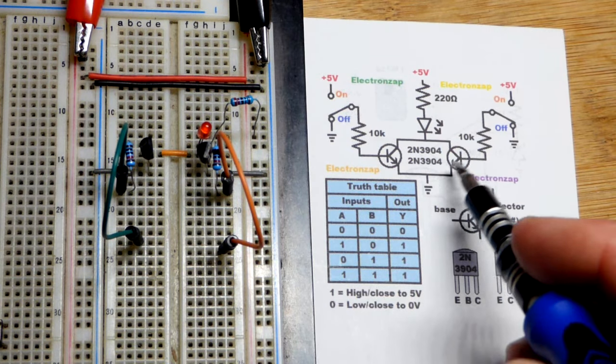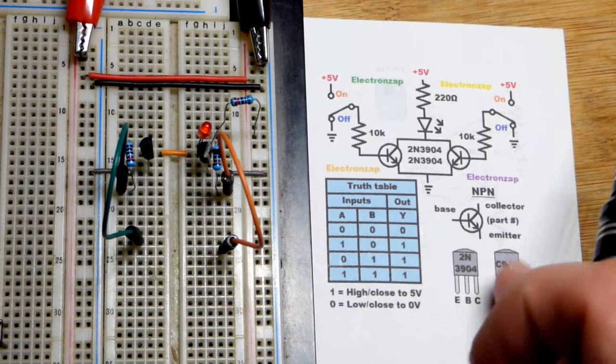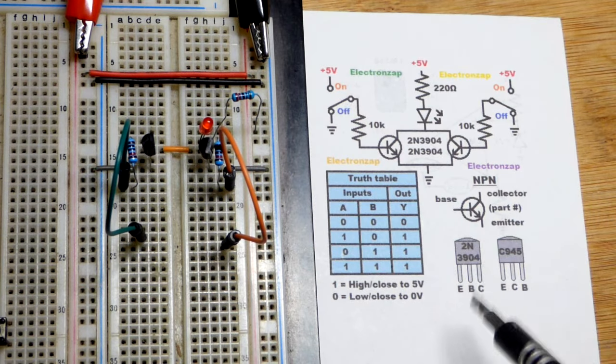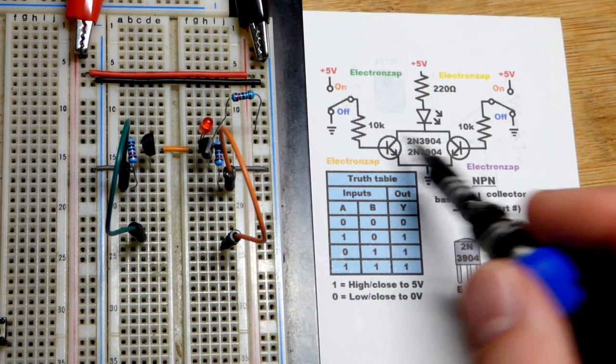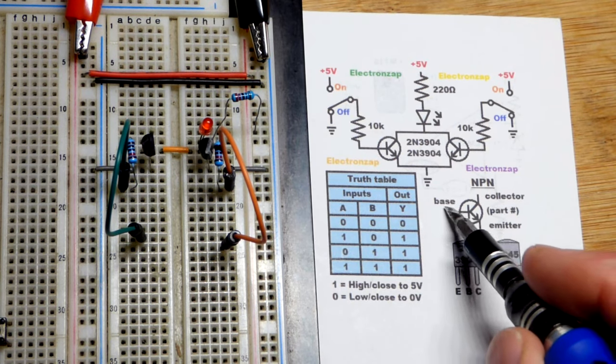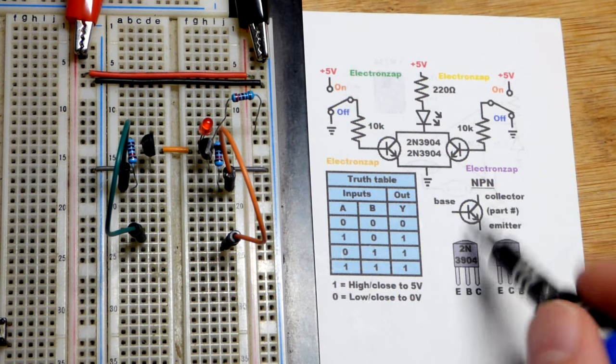So now in this video, we have a couple NPN bipolar junction transistors wired as OR gates. There's the pin layout if you're using the 2N3904, that's what I'm using there. We got the emitter where the arrow is, base off to the side there, collector on top.